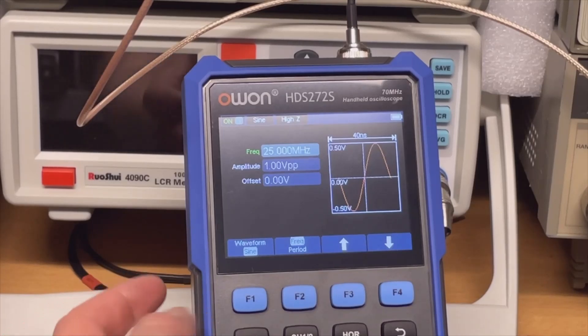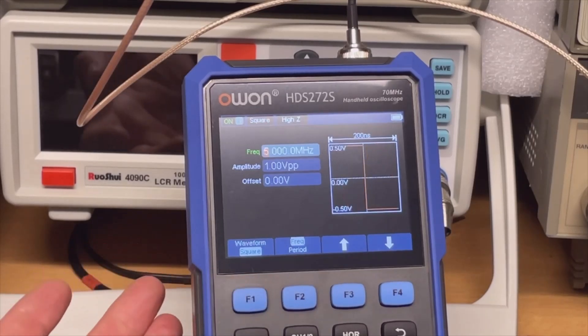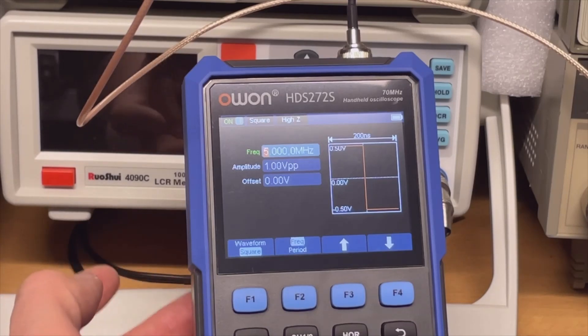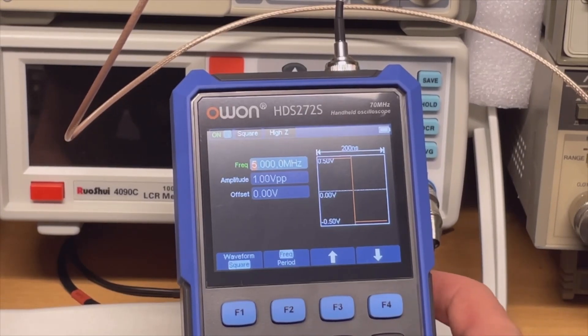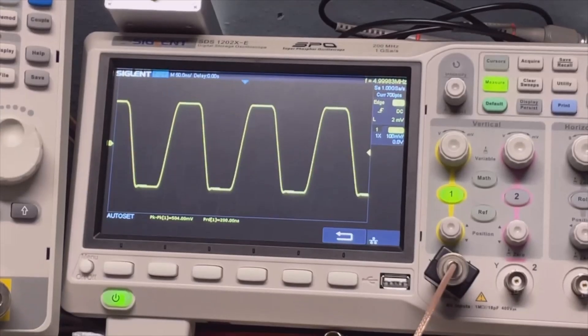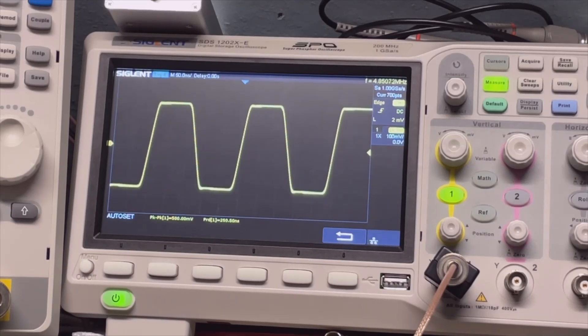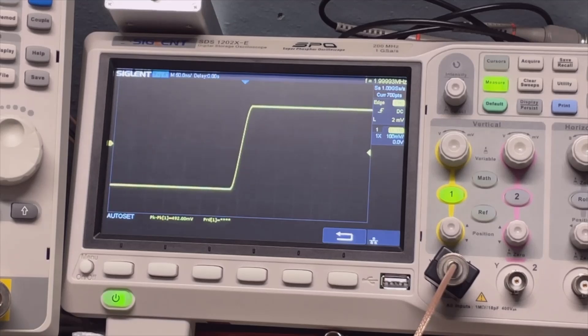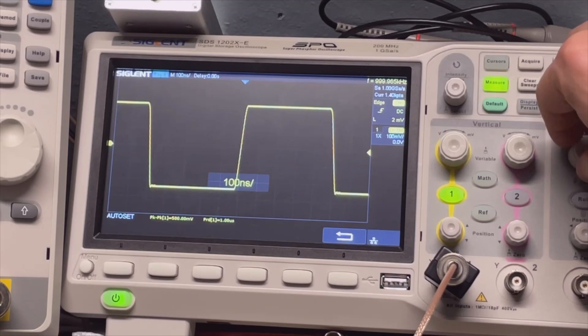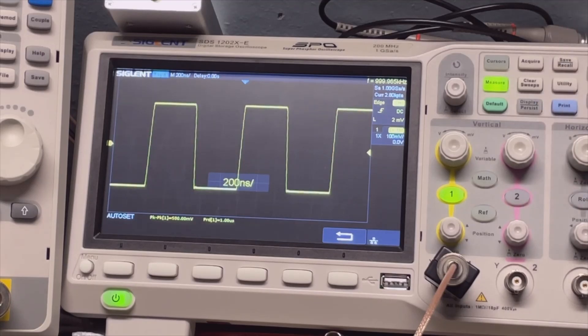We can also change waveforms. If I push now we go to squares and let's have a look at that. The square is a maximum of 5 megahertz I see because I cannot increase, I can only decrease. Yeah, on 5 megahertz the square looks like this - it is a little bit less square. Let's go to 4, let's go to 3, 2 megahertz, 1 megahertz. Now it becomes a square indeed.